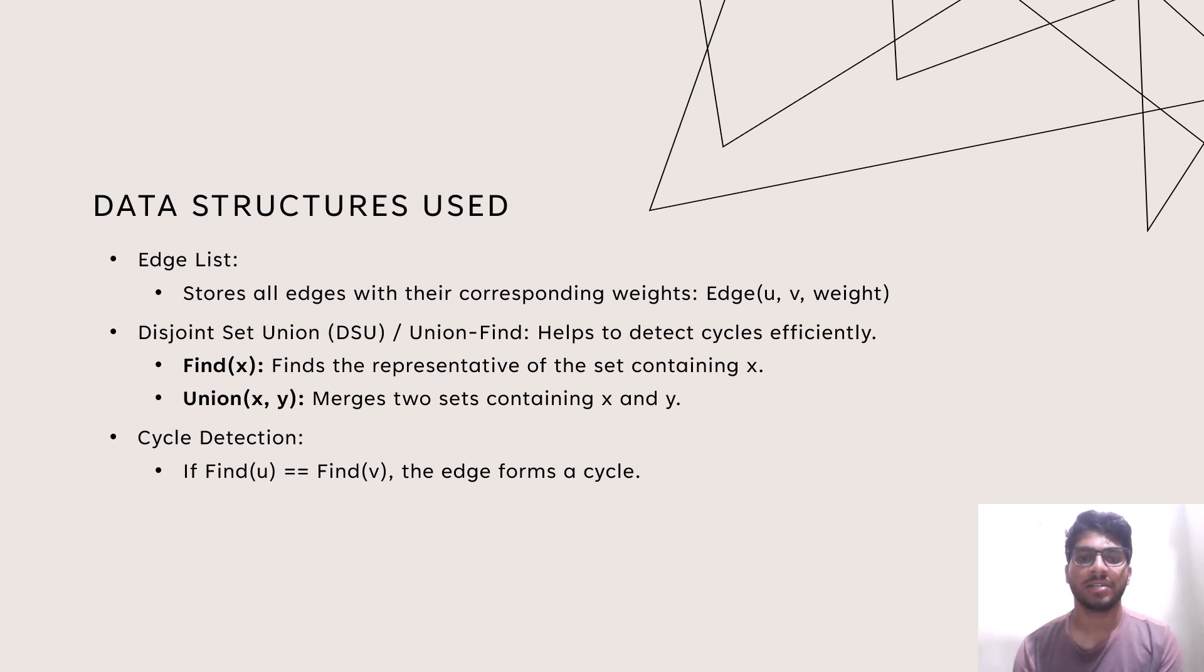Find(X): Find the representative of the set containing X. Union(X, Y): merges two sets containing X and Y. Cycle Detection: If Find(u) equals Find(v), the edge forms a cycle.